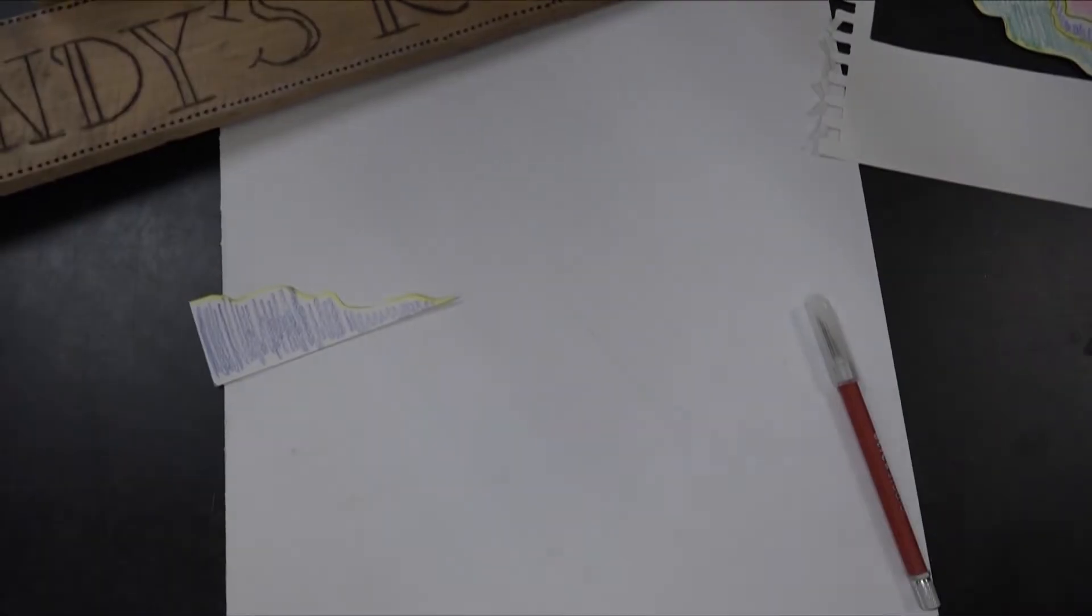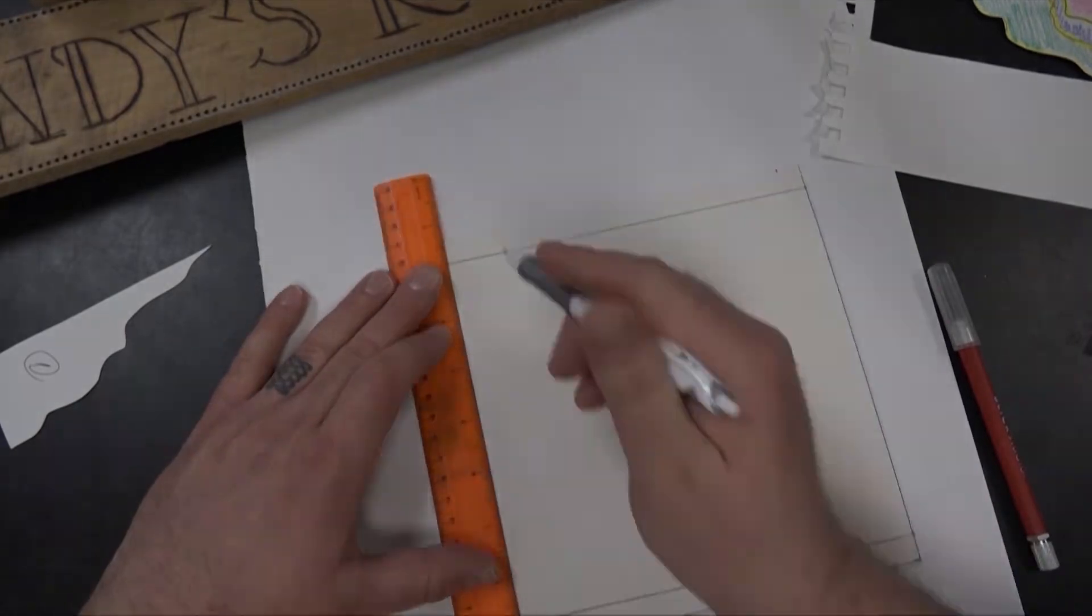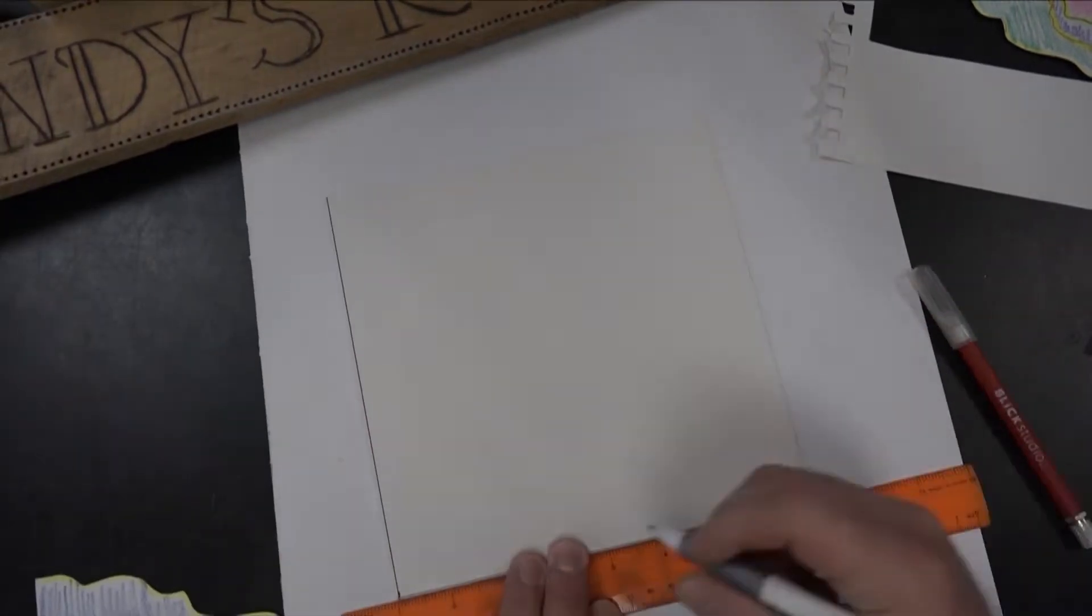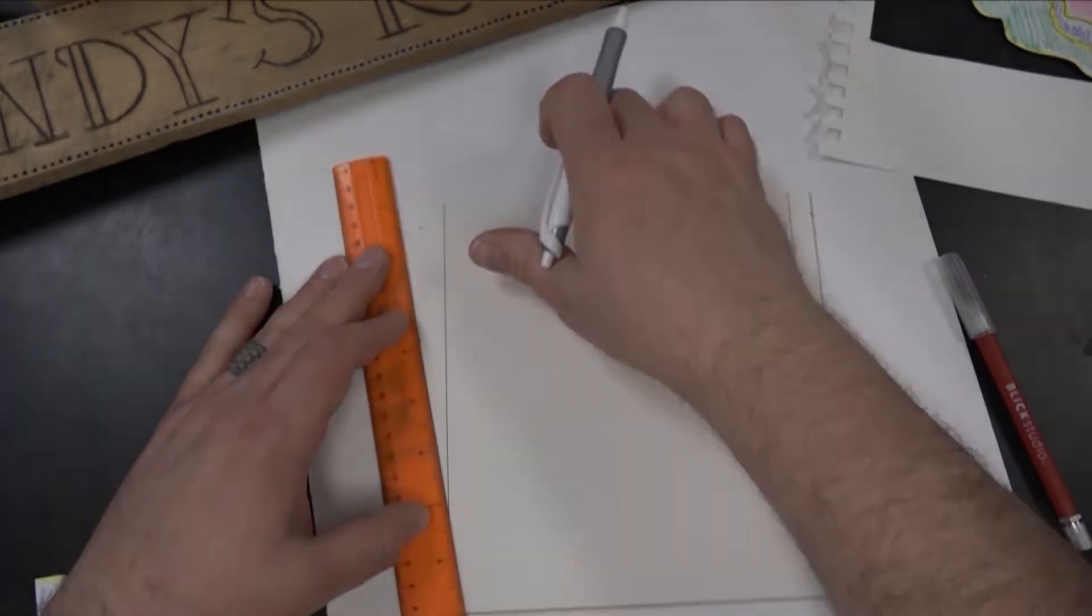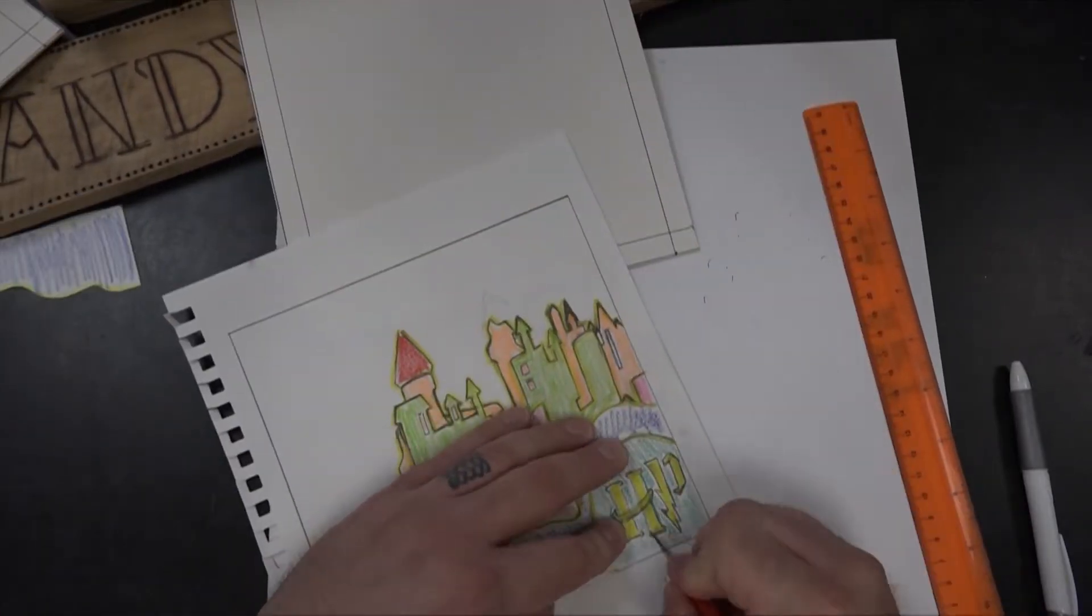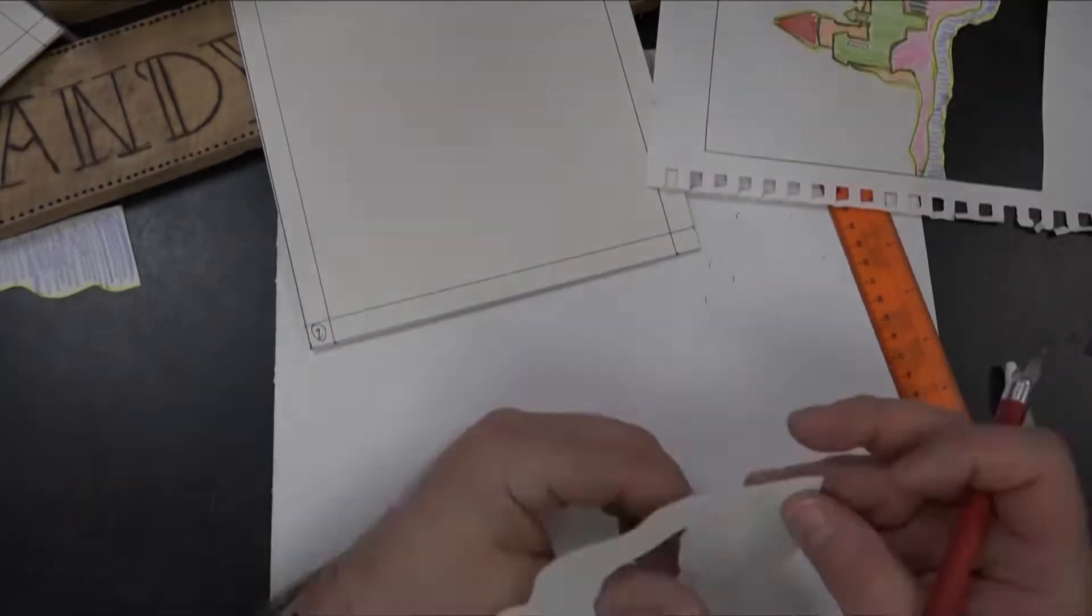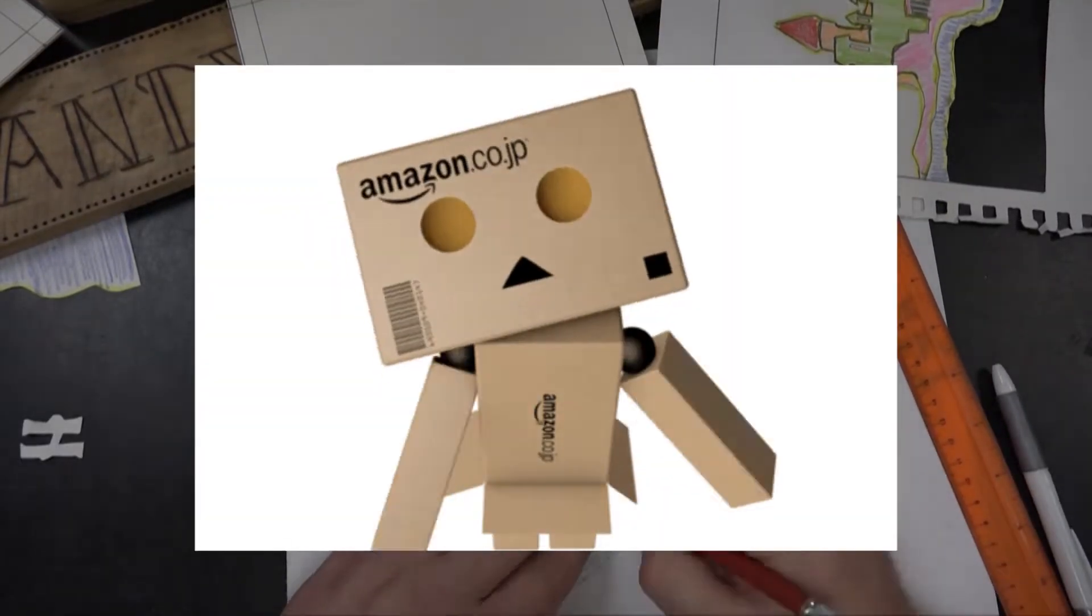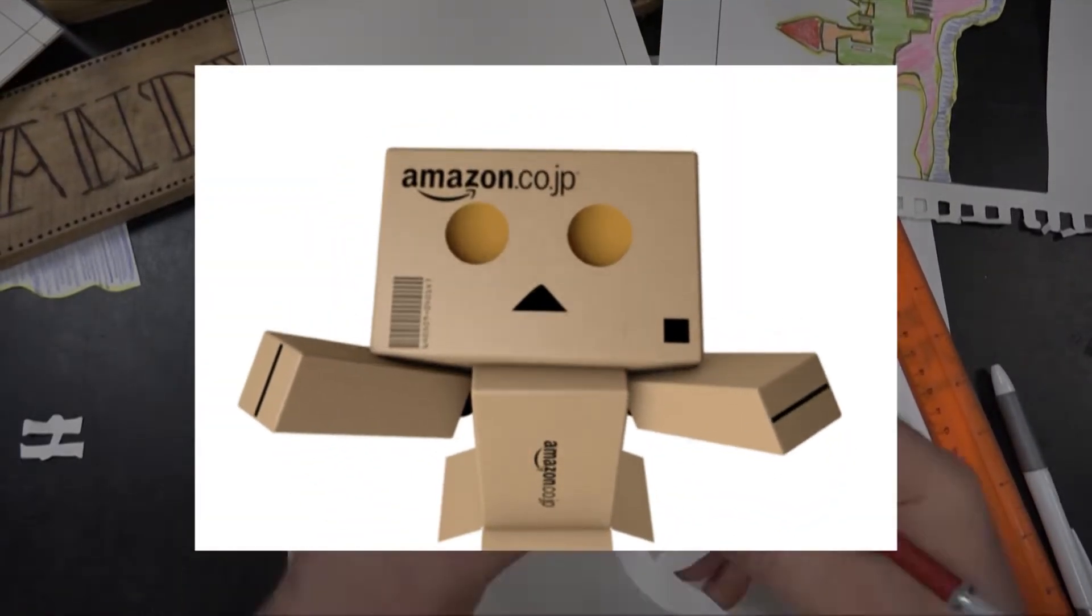Hit somebody up to see if they've got matte board before you buy it. If you don't have matte board, cardboard works just fine. I recommend using cereal boxes because cereal box cardboard is closer to matte board than an Amazon box. Amazon boxes are corrugated with that wavy stuff in the middle, so they don't work nearly as efficiently.